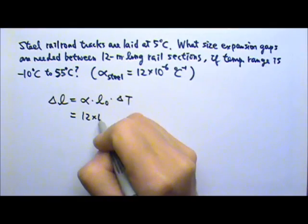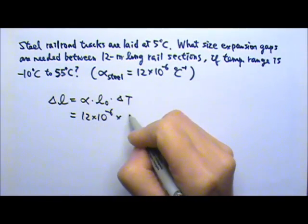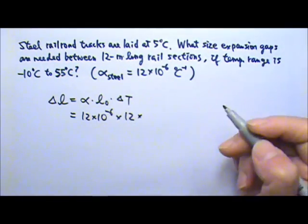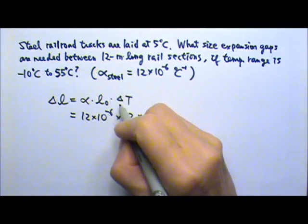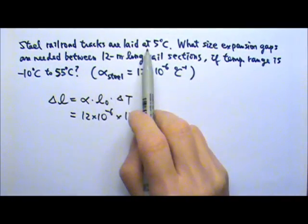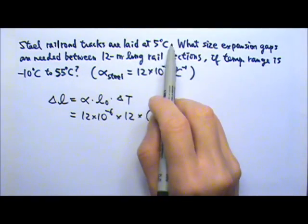The alpha is 12 times 10 to the negative 6. The original length of the section is 12 meters. The temperature range, at the time the tracks are laid, the temperature is 5 degrees Celsius.